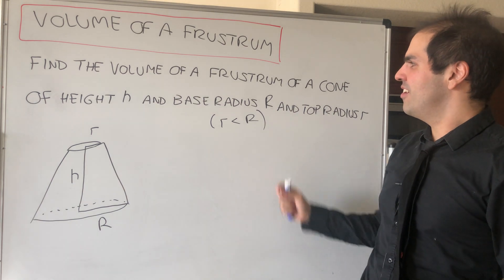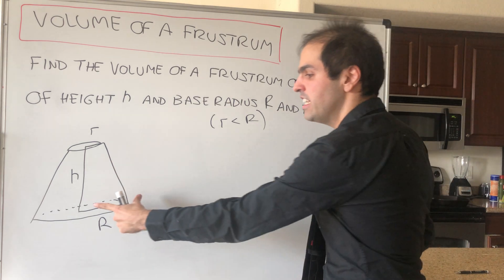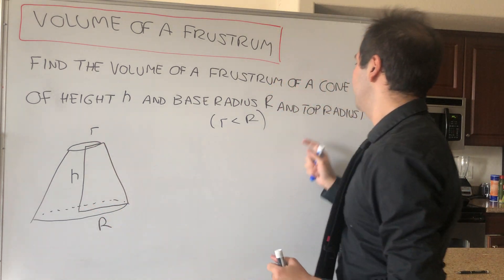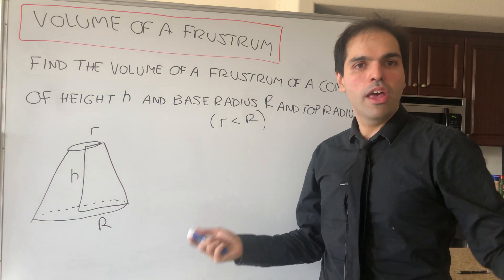And in particular, let's find the volume of a frustum of a cone of height h and base radius capital R and top radius little r, where we assume the top is smaller than the bottom.